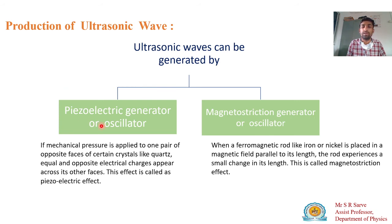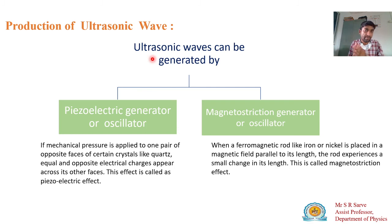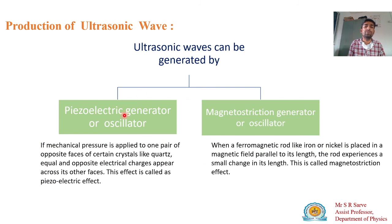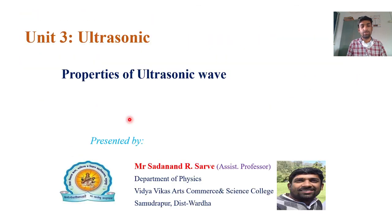So this covers the generation of ultrasonic waves using the piezoelectric generator and the magnetostriction generator. To summarize: ultrasonic waves have frequency greater than the human audible range of 20 kilohertz; their properties include very high frequency, low wavelength, high penetration power, high energy, and low diffraction; and they can be generated by the piezoelectric or magnetostriction methods. In the next lecture we will learn exactly how to generate ultrasonic waves using the piezoelectric generator.